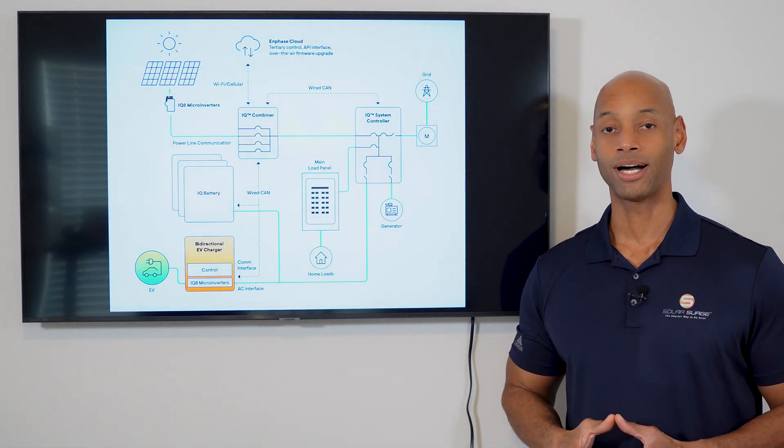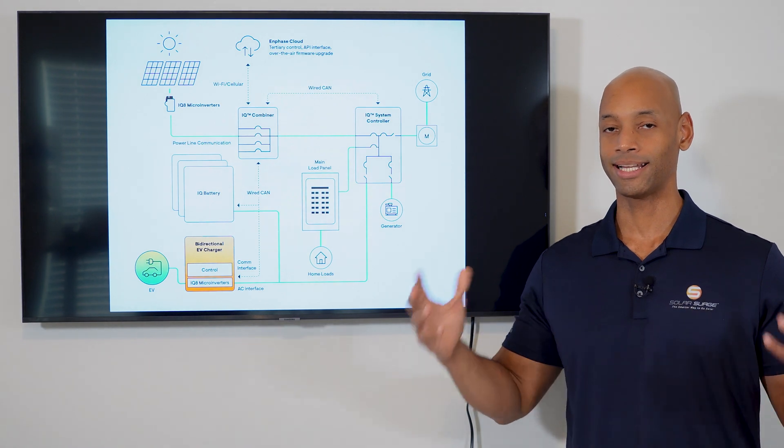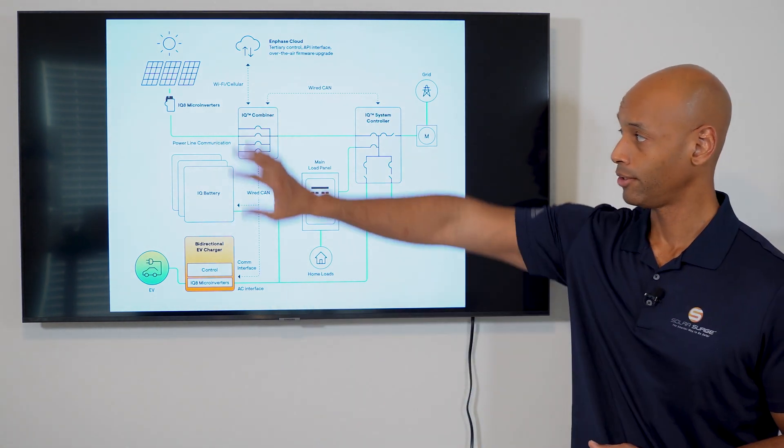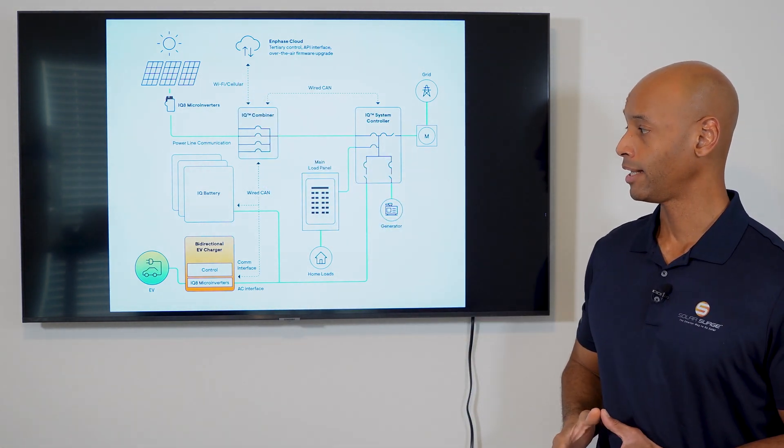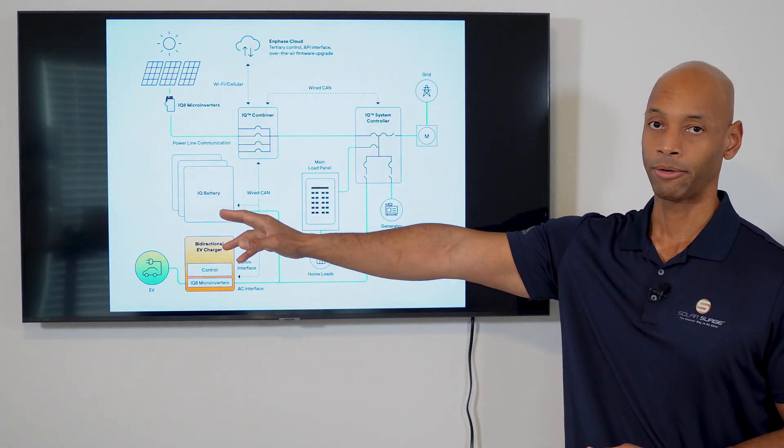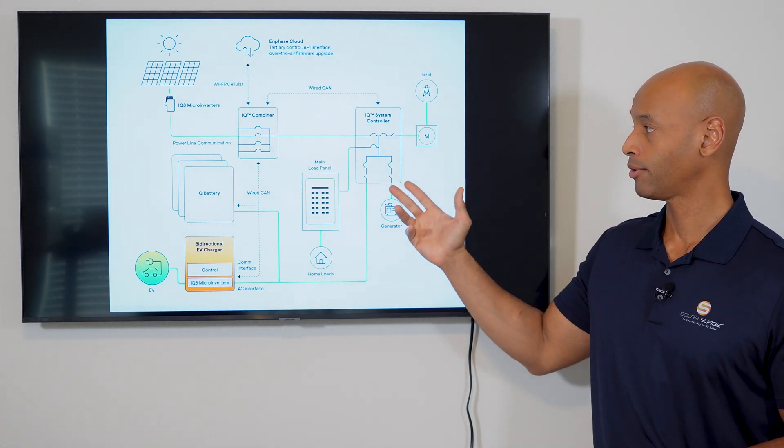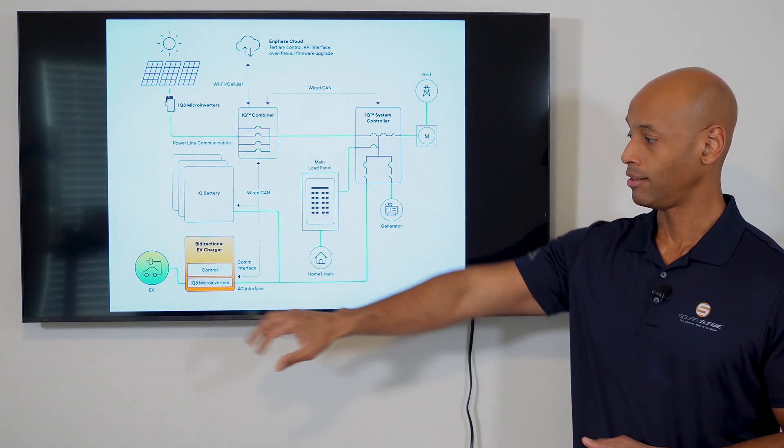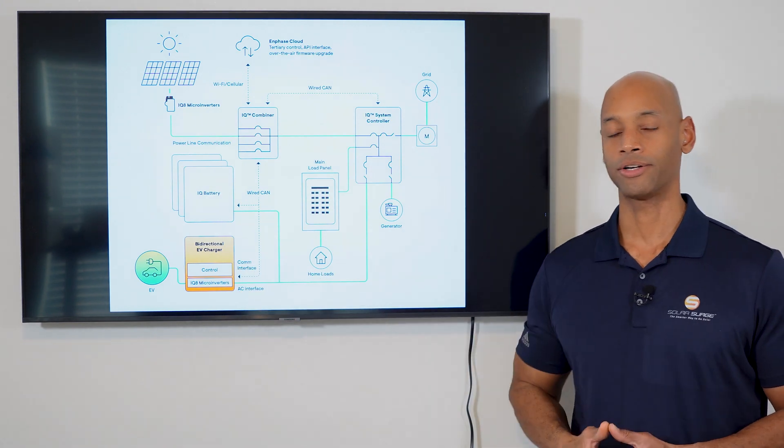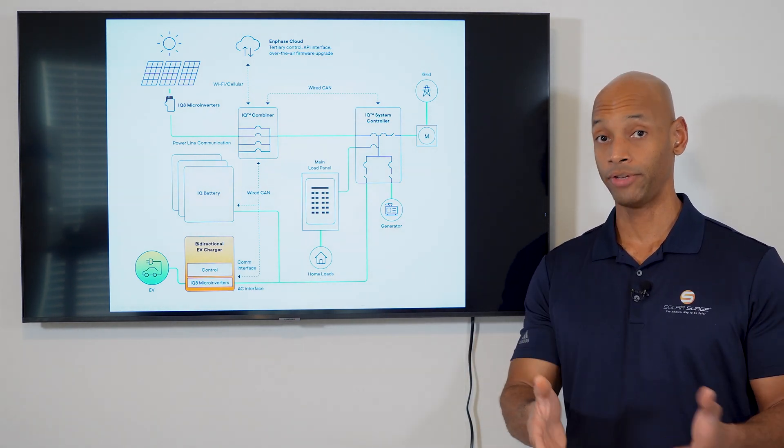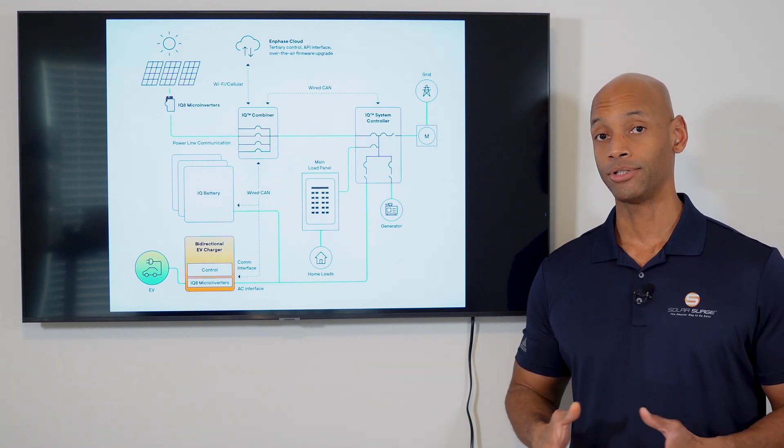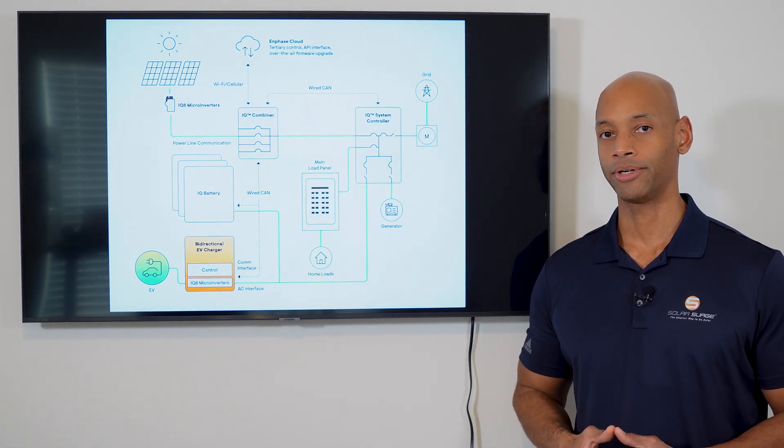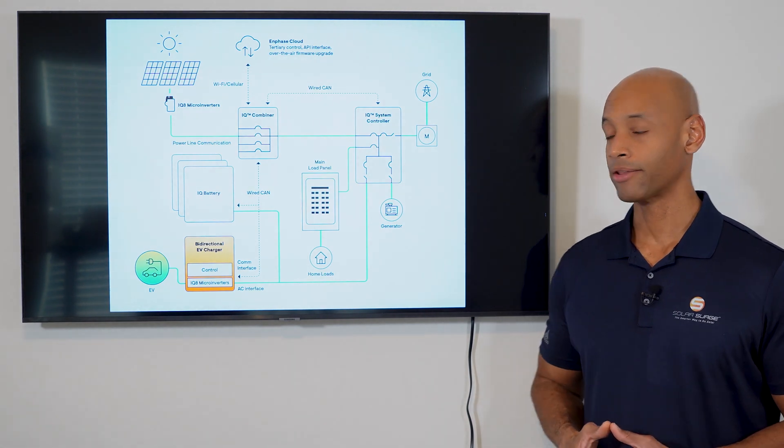But as many of you know that have been following this channel, this year Enphase has really stepped up their game, and now they're offering whole home energy management solutions - not just including the original solar pieces, but including now the IQ battery for partial home or whole home backup, the IQ system controller which acts as your whole home transfer switch, also gives you a generator hookup option, and then the new Enphase bi-directional EV charger, which allows you to charge your vehicle directly from solar, but also allows you to tap into your vehicle storage battery as an auxiliary power source to power your home during a blackout. So let's step through these other components one at a time.